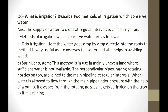The next method is the sprinkler system. This method is used in uneven land where sufficient water is not available. It works like a fountain — perpendicular pipes have a rotating nozzle on top joined from the main pipeline at regular intervals. When water flows through the main pipe under pressure with the help of a pump, it escapes from the rotating nozzles and gets sprinkled on the crop as if it is raining.